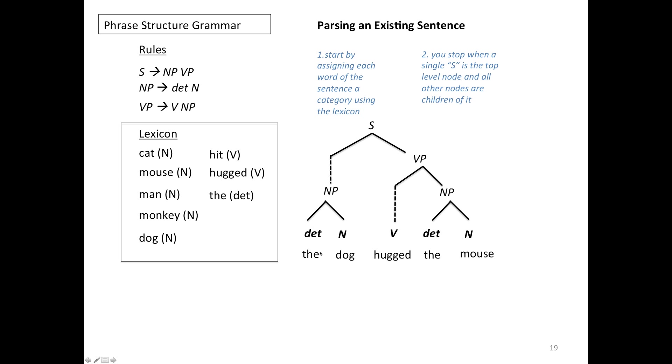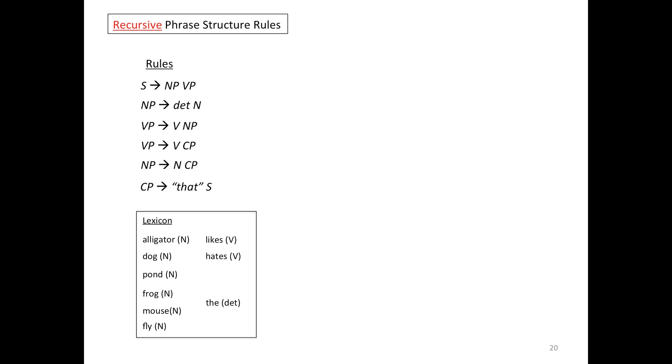I stopped there and here are some pointers for how you parse an existing sentence. You always start by assigning each word of the sentence a category using the lexicon and you stop when you've assigned categories to sentence and S is the top-level node and all other nodes are children of it. That's the stopping point.